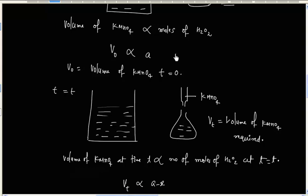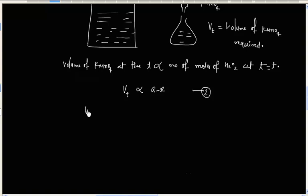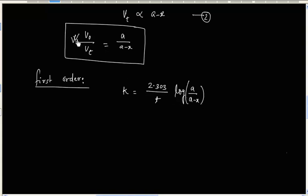Now, let us call this equation 1 and this equation 2. So, we can divide these two equations. Now, for first order we know, K equals 2.303 by T log A by A minus X. And A by A minus X is nothing but V0 by VT.